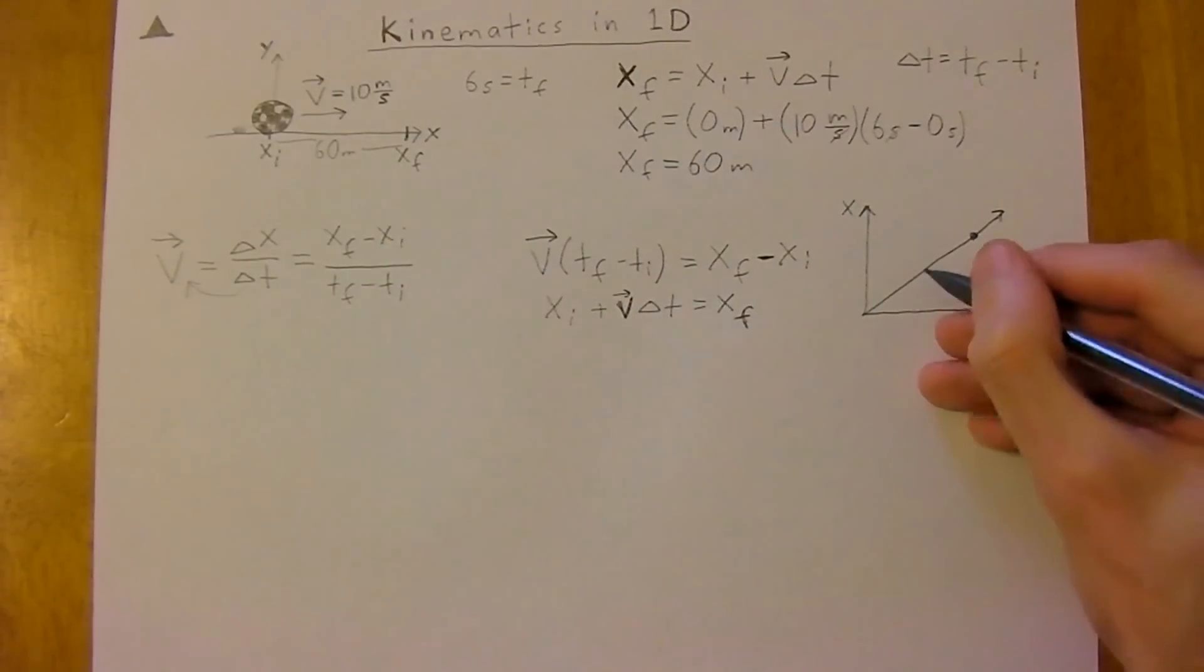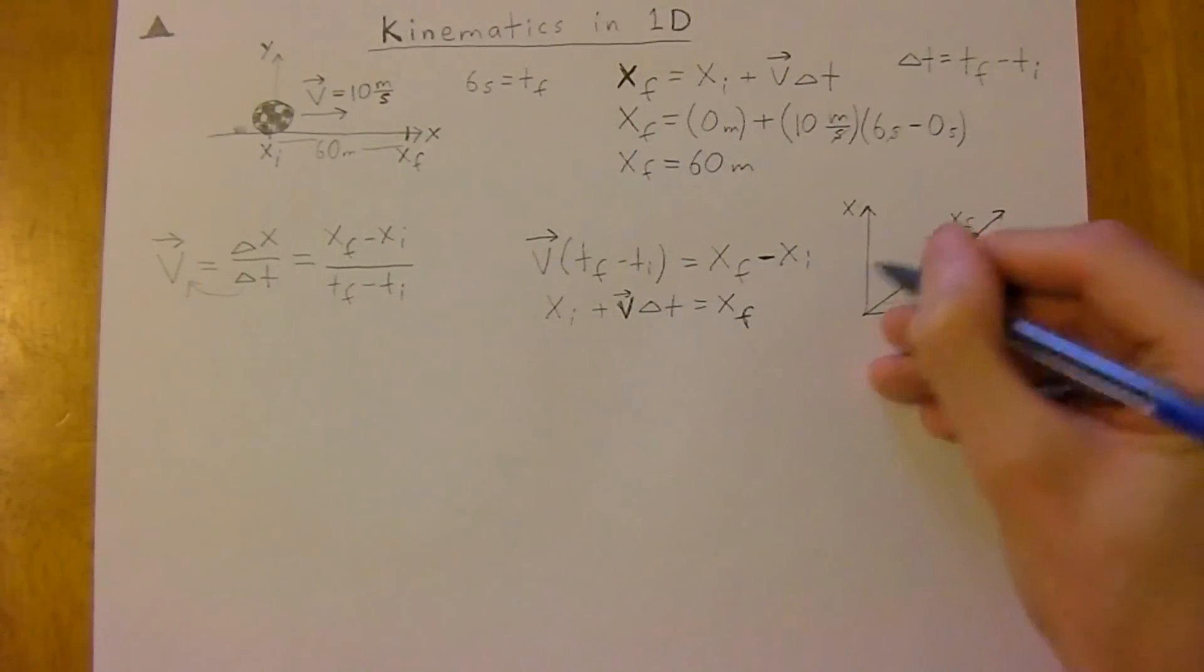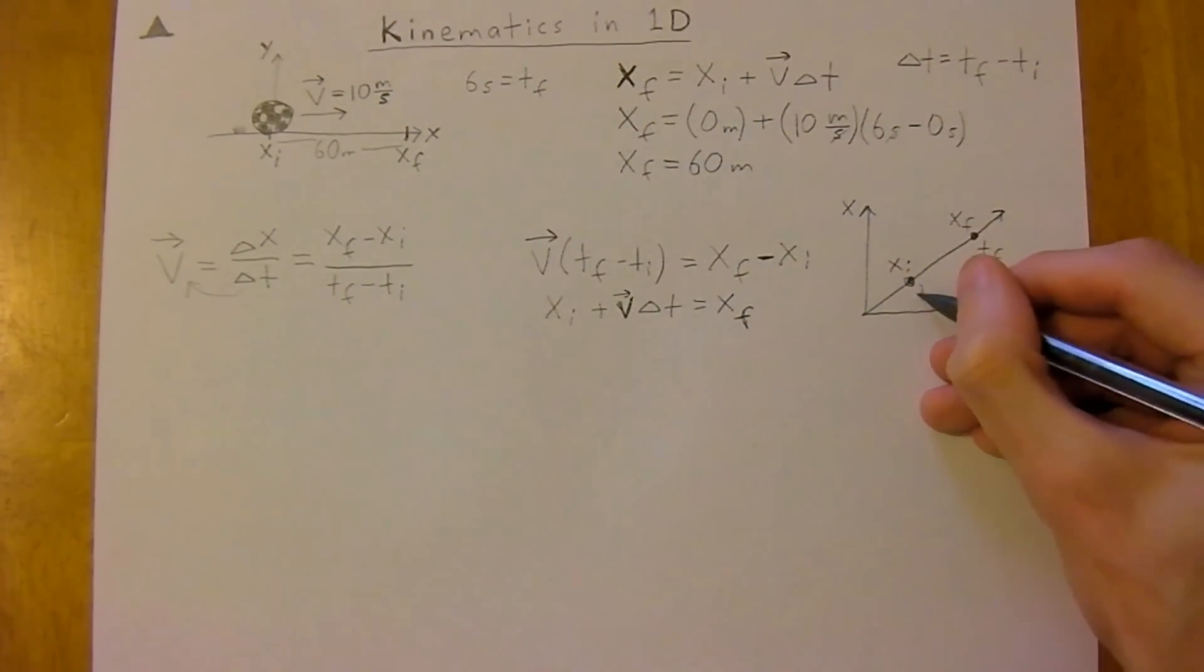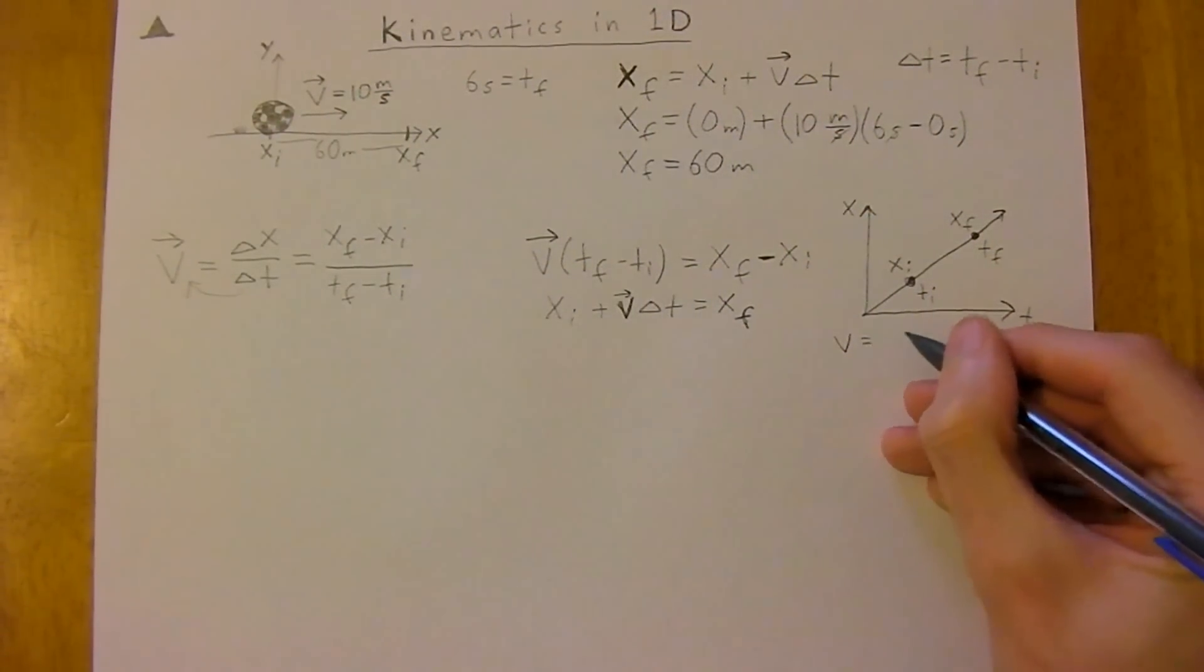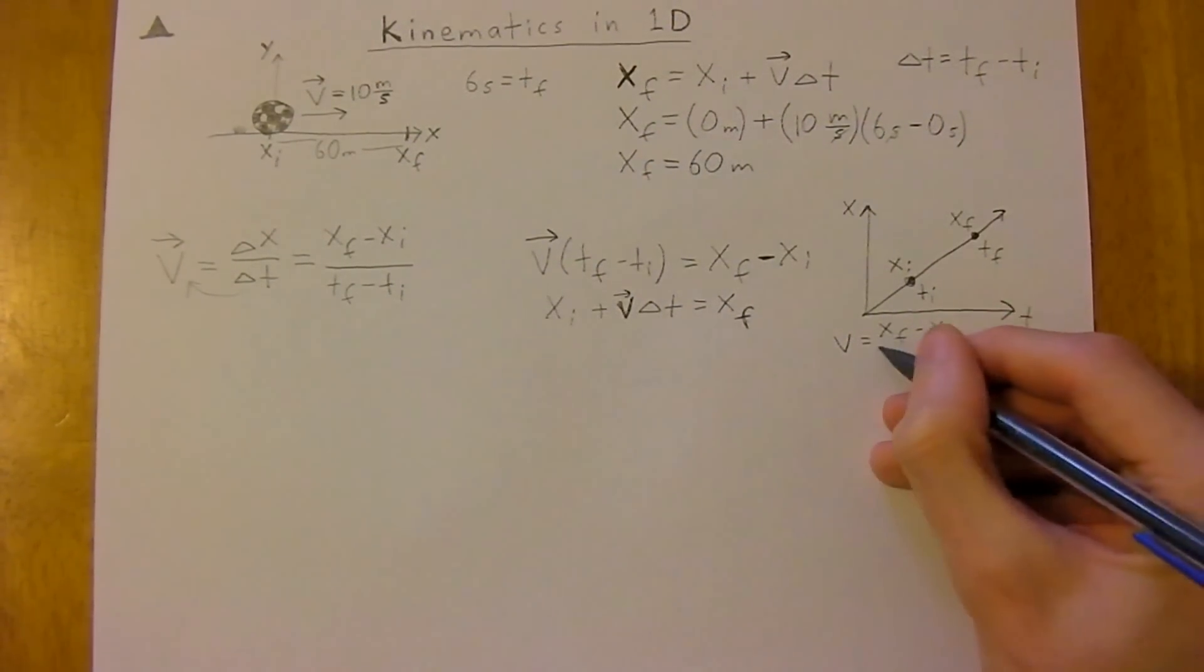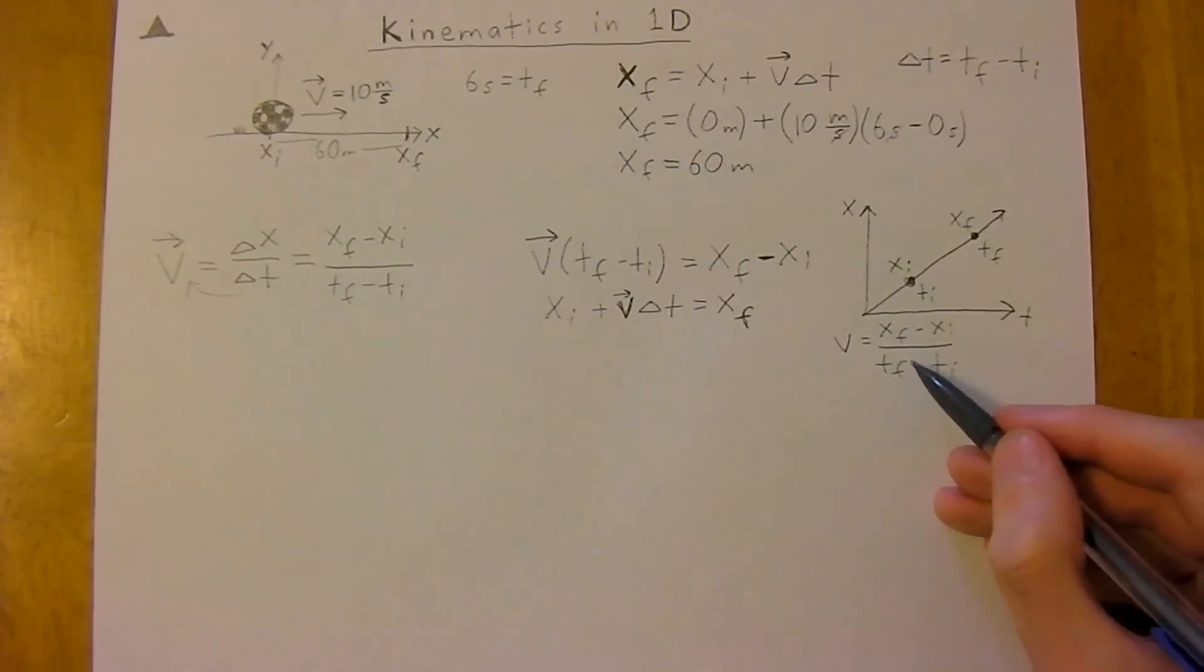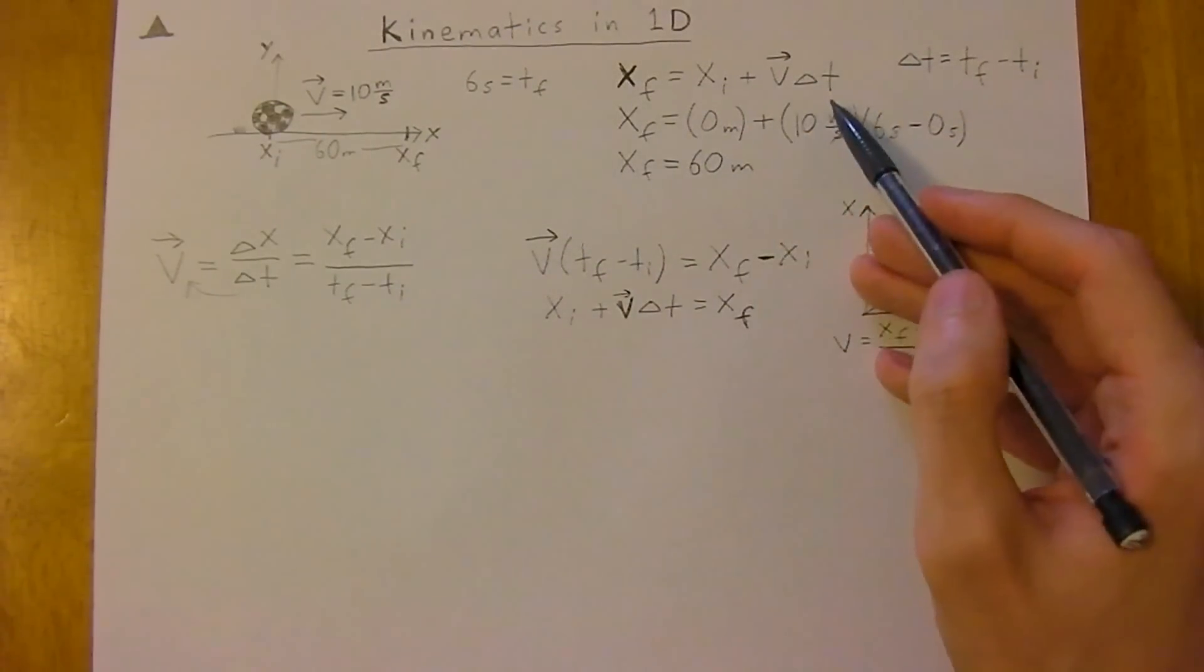So say we had two points on it, we'll call this our x-final, we'll keep it simple, x-initial, time-final, time-initial. Well the slope of this is your x-final minus x-initial divided by time-final minus time-initial. So this is exactly what we use to derive this equation here.